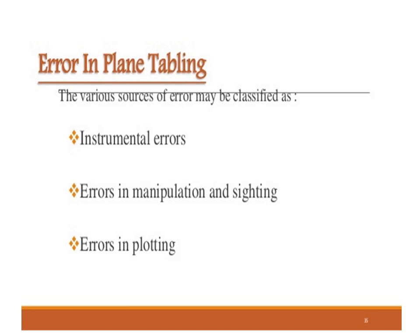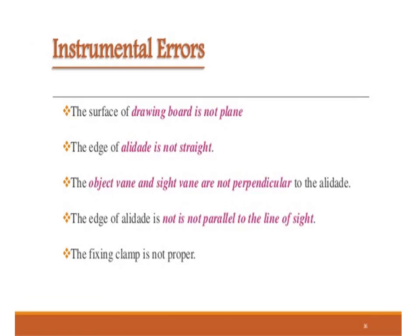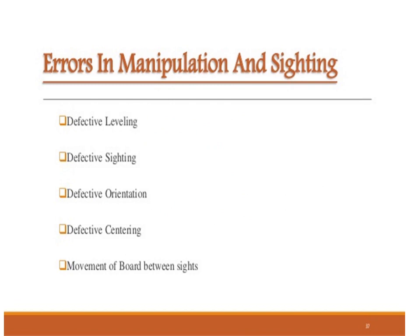Errors in plane table surveying fall into three categories: instrumental errors, errors in manipulation and sighting, and errors in plotting. Instrumental errors include: the drawing board surface not being a plane, the edge of the alidade not being straight, the object vane and sight vane not perpendicular to the alidade, the edge of the alidade not parallel to the line of sight, and the fixing clamp being improper. Errors in manipulation and sighting include: defective leveling, defective sighting, defective orientation, defective centering, and movement of the board between sights.